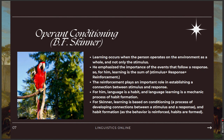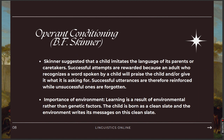In operant conditioning, the parrot learns to do more of what gets rewarded and less of what doesn't, as well as avoiding behaviors that lead to punishment. It's all about learning from the consequences of its actions. Skinner suggested that a child imitates the language of its parents or caretakers. Successful attempts are rewarded because an adult who recognizes a word spoken by a child praises the child or gives it what it is asking for. Successful utterances are therefore reinforced while unsuccessful ones are forgotten.